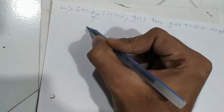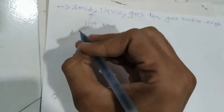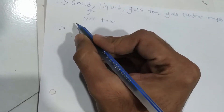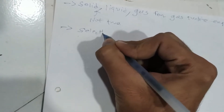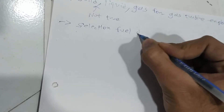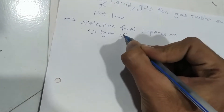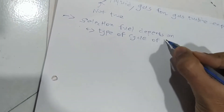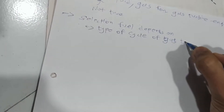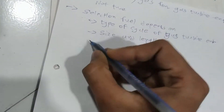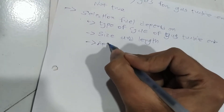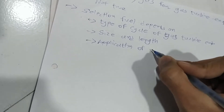However, this statement is not true for all gas turbines. We have to consider lots of things while selecting our fuel. The selection of fuel depends on the type of cycle of the gas turbine engine, and we also have to consider its size and length.